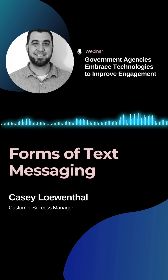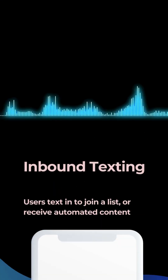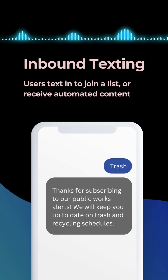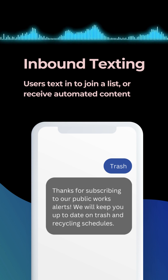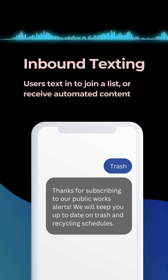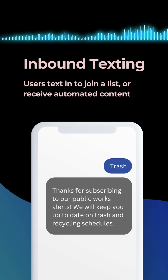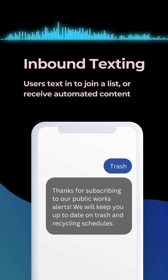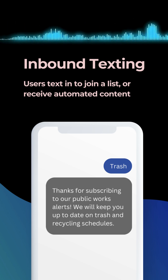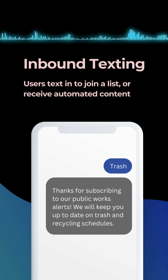In terms of the functionality and different types: an inbound text is users opting into a list. Our platform has a way for you to create unlimited lists based on job roles, regions, and industries. When users opt in, they're essentially giving you permission to receive future messaging from you, and as they opt in, it can create automated generated responses from your organization that you customize.